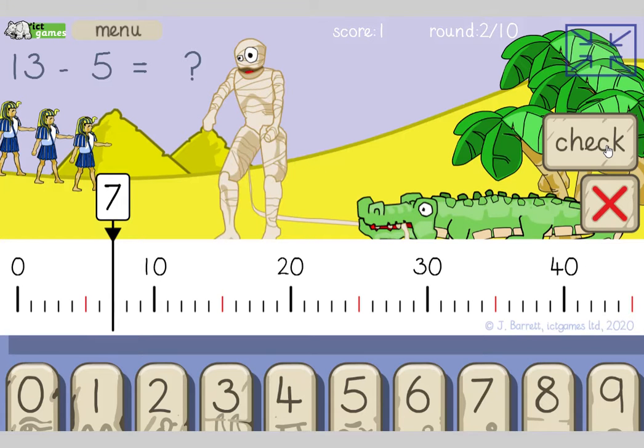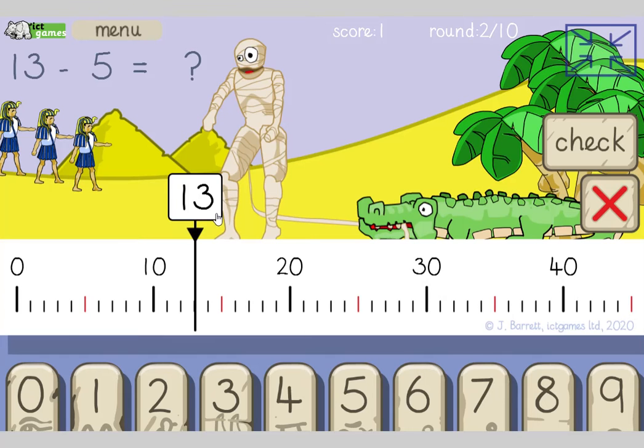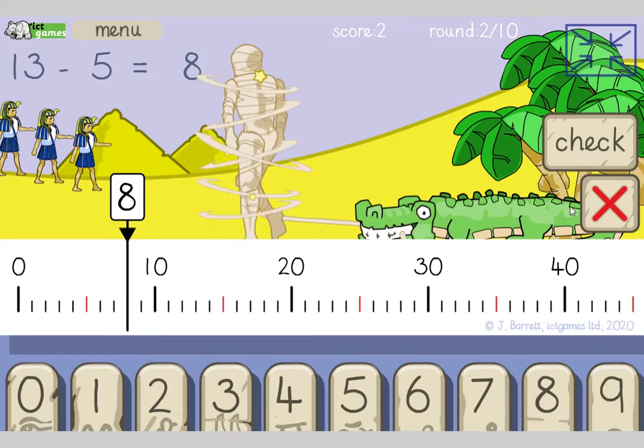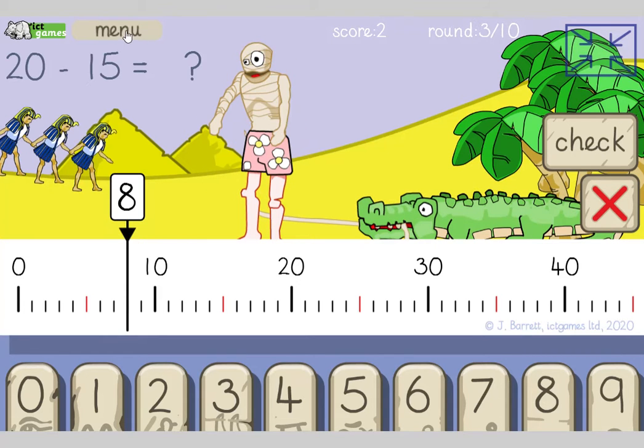Let's do 13, take away 5. Let's find 13. There's 13, take away 5. 1, 2, 3, 4, 5. 13, take away 5. That's a shame. Oh, mummy. Let's take it to the next level, shall we? Let's get a bit harder.